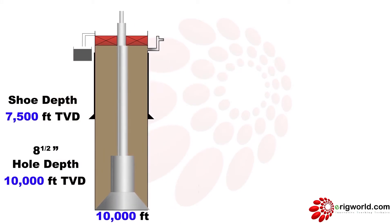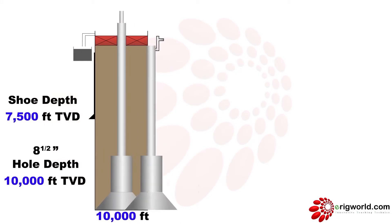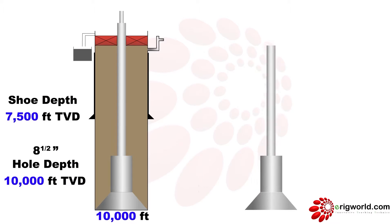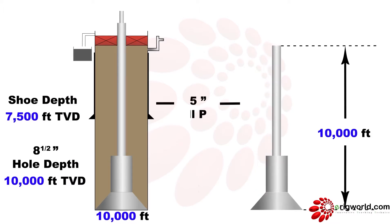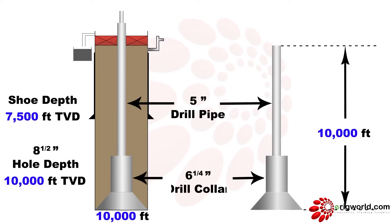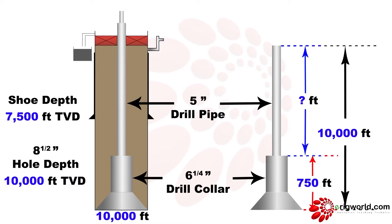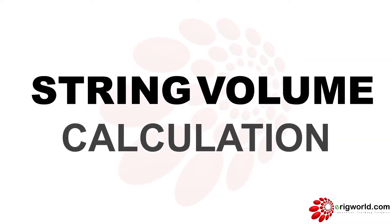The total string required to drill this well consists of 5-inch drill pipe and 6-and-a-quarter-inch drill collar. The drill pipe length is not given, so first I need to perform a drill string volume calculation — let us understand how to do that.